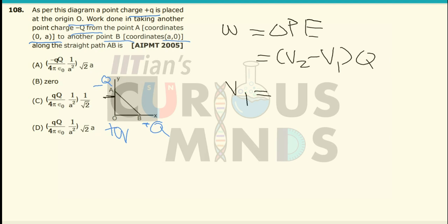V1 at point A will be equal to, due to the positive charge at point A, it will be equal to 1 by 4 pi epsilon 0, Q divided by.